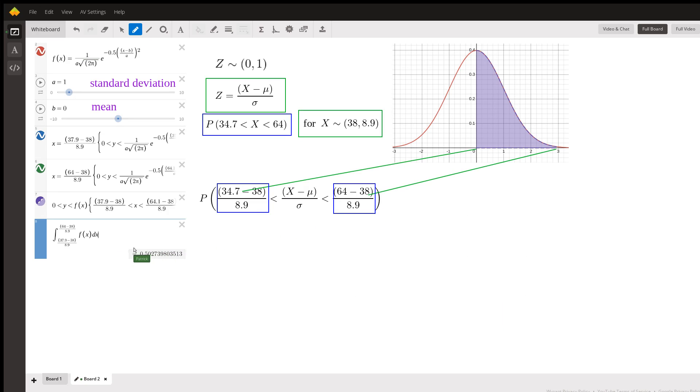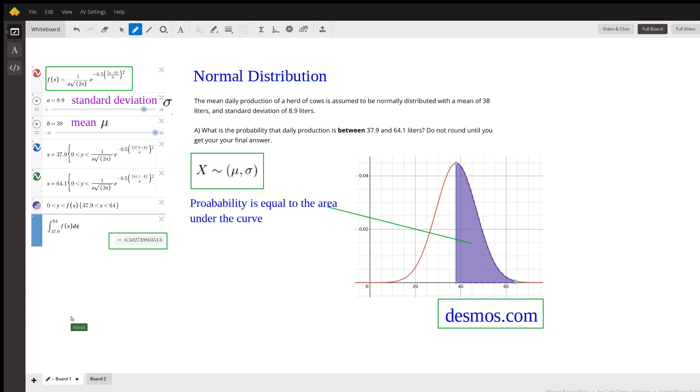See if you can get the same answer. There's the probability—it's the area under the curve indicated there in the purple. And this is 0.5027. It's the same probability.